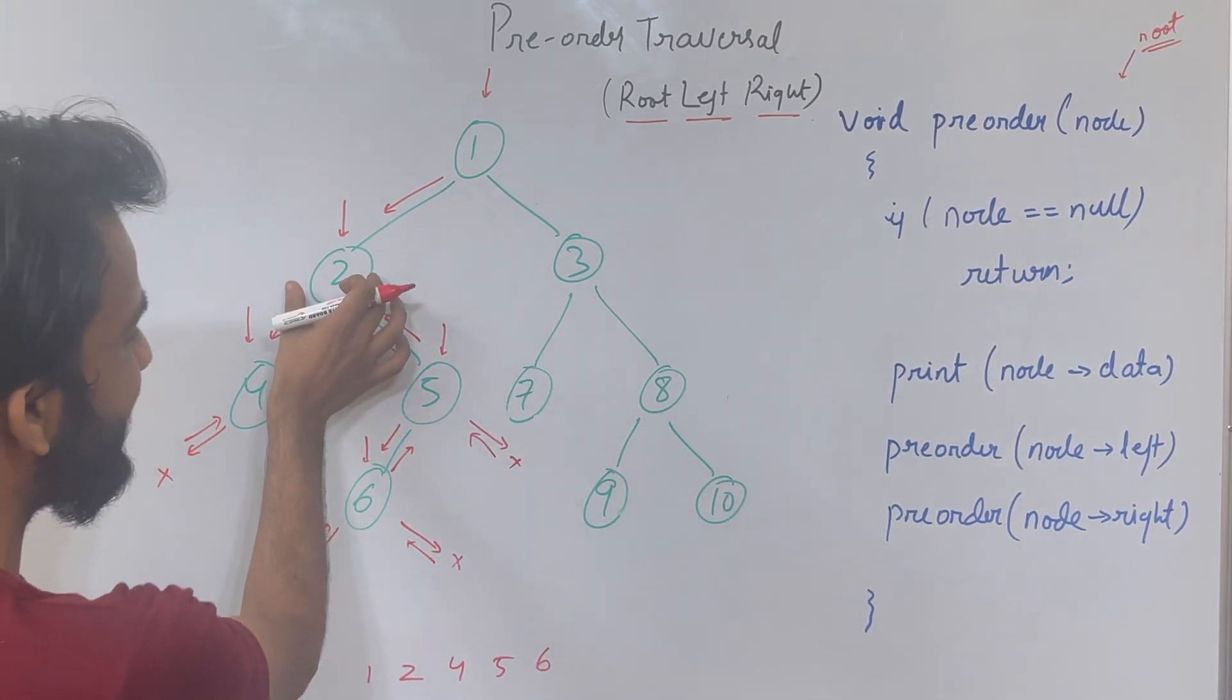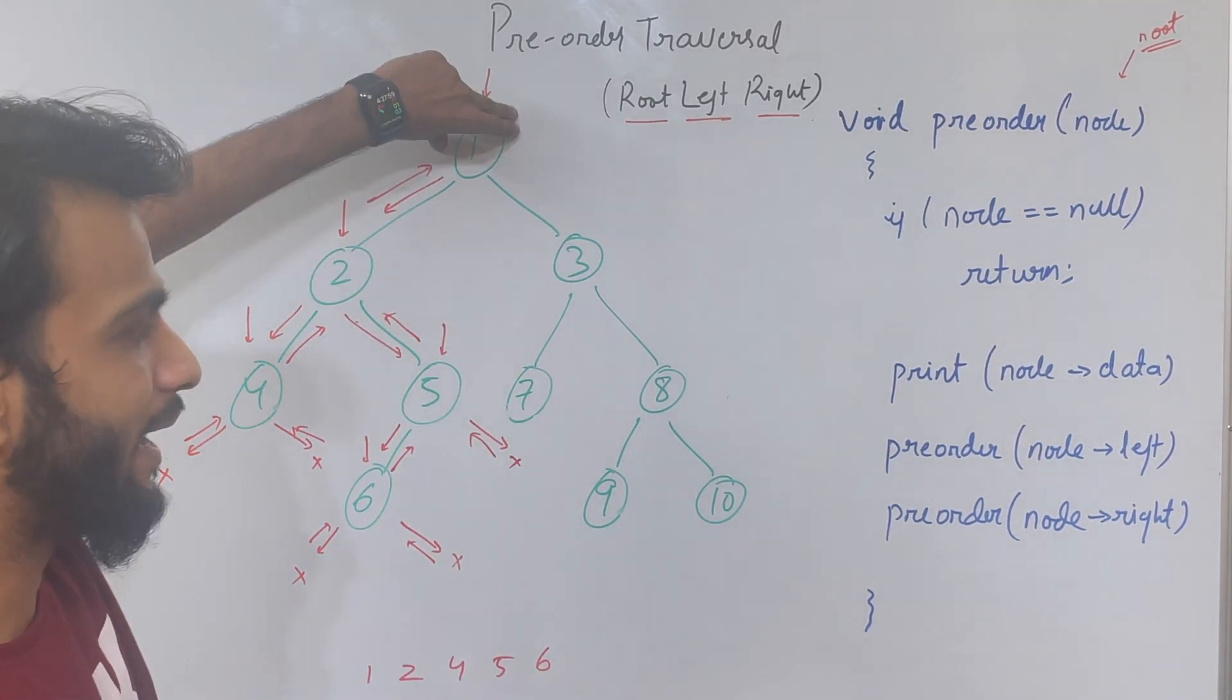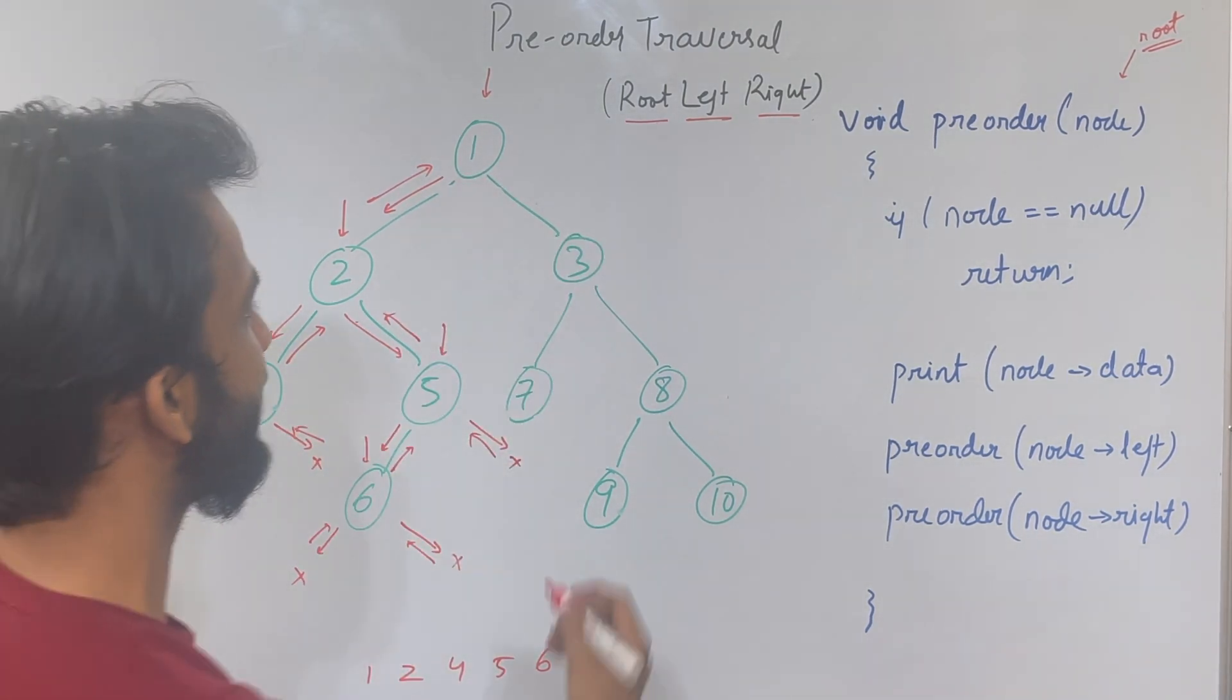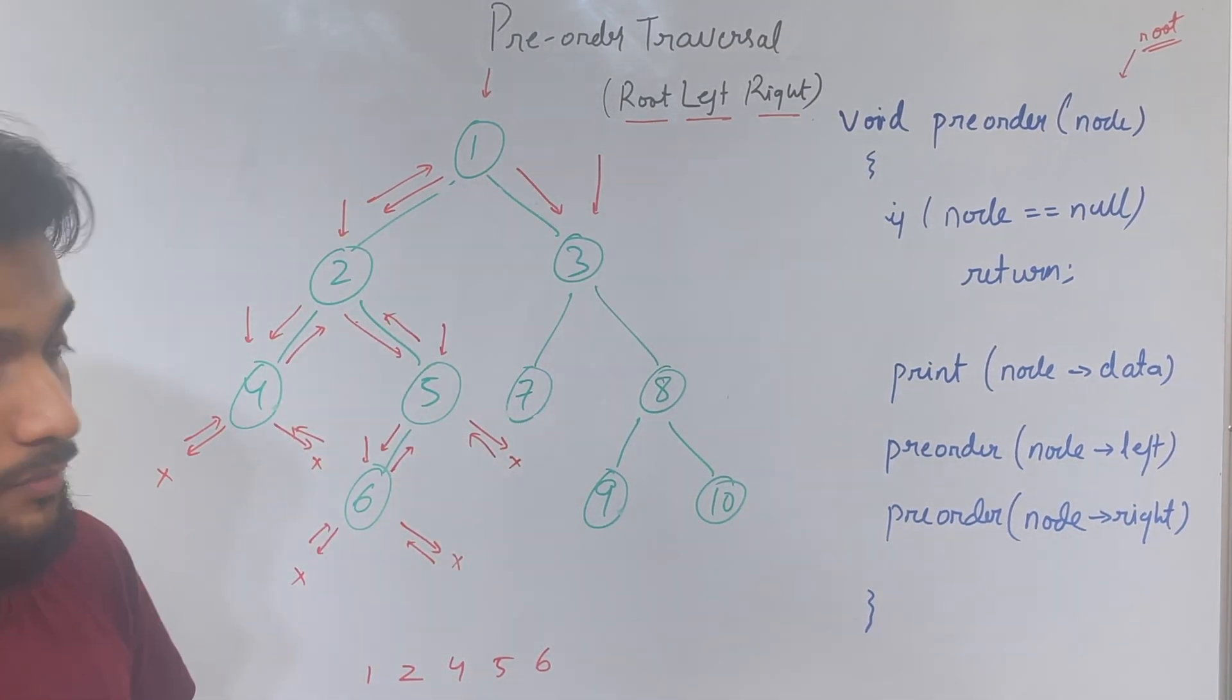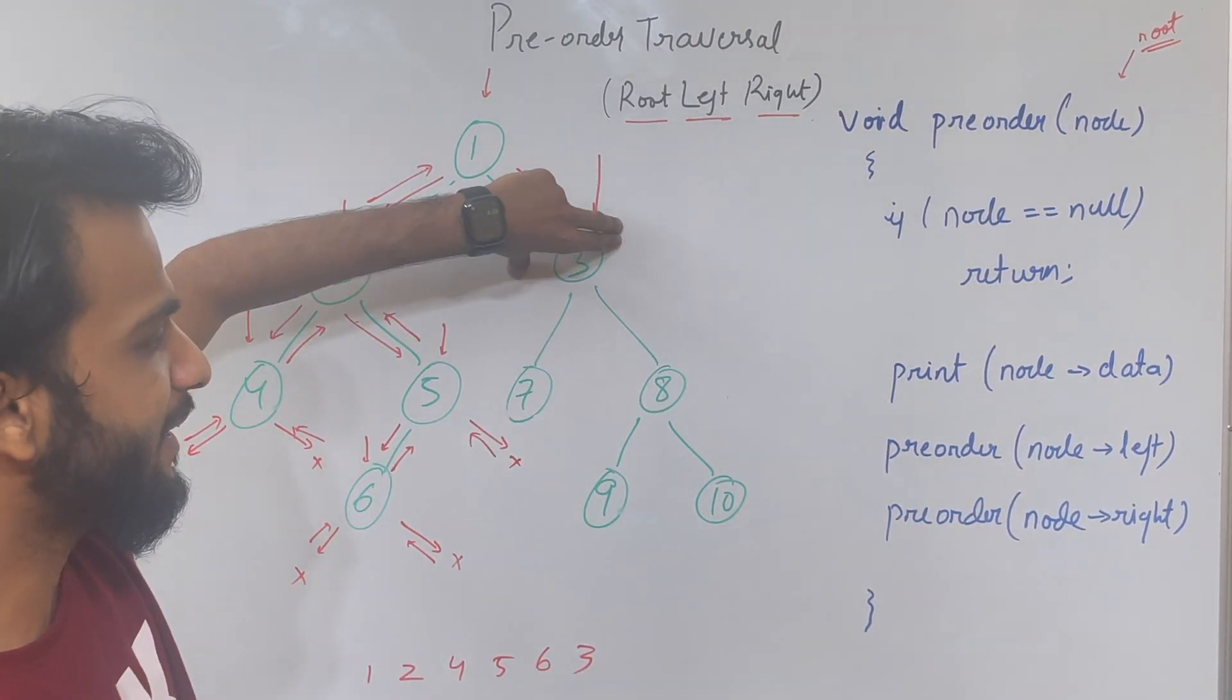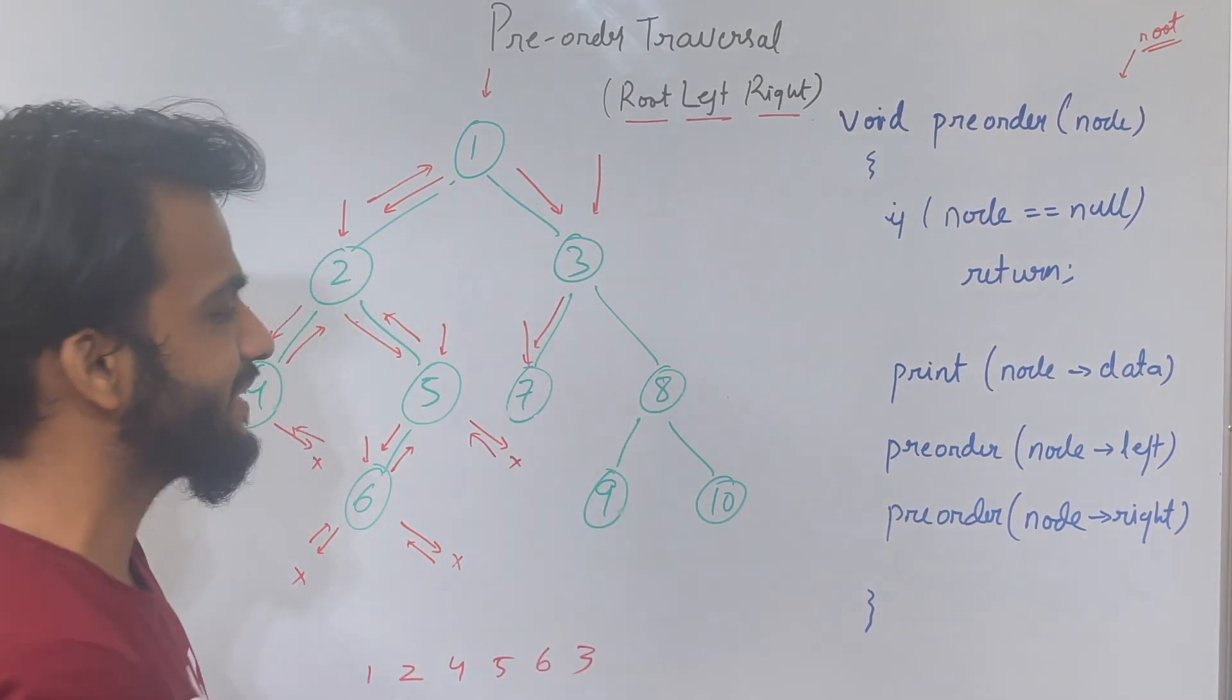For node 2, print is done, left is done, right is done. Goes back. For node 1, print is done, left is done. Time to go to the right. Recursion goes to the right. As of now, I'm at node 3. Node 3 says print, so I print 3. Once I print it, it says go to the left. Goes to the left and stands at node 7.